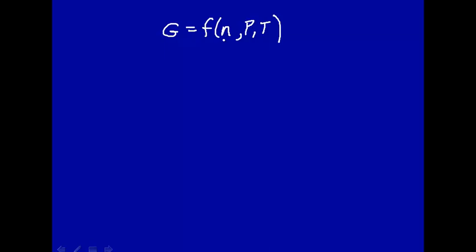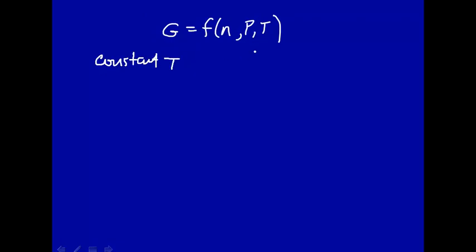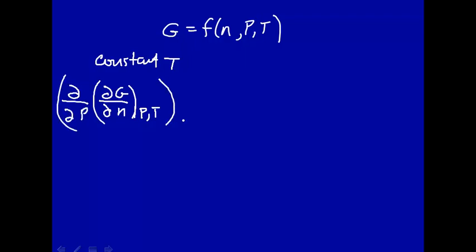We've got that third variable in there. When we talked about Gibbs free energy it was non-PV work, so that non-PV work when we add number of moles is chemical work. We now take the derivative with respect to the various parameters. This is an isothermal process, so constant temperature. The only two things changing are number of moles and pressure. Take the derivative of g with respect to number of moles at constant pressure and temperature, and then take the derivative of this with respect to pressure at constant number of moles and temperature.